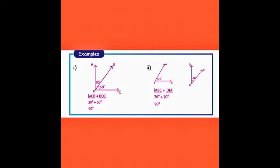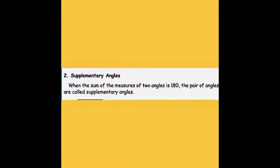Now we are going to see about the supplementary angle. While the complementary angle adds up to 90 degrees, the supplementary angle means: when the sum of the measures of two angles is 180 degrees, that pair of angles is called supplementary angles.